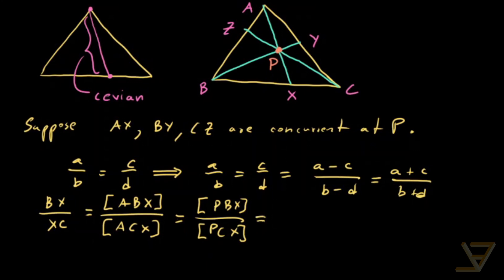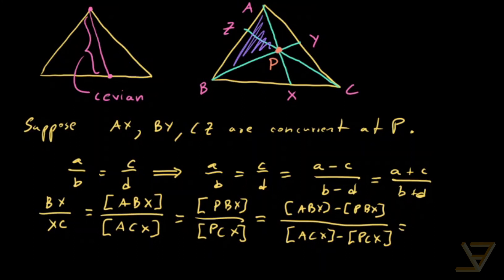So what we can do is subtract these numerators to get ABX minus PBX over ACX minus PCX. And what we find is that these are equal to this triangle here. So that's triangle ABP over this triangle here, which is the area of triangle ACP. So that's our first result.